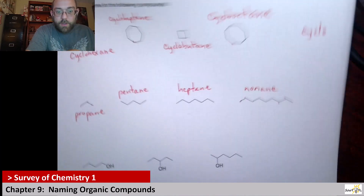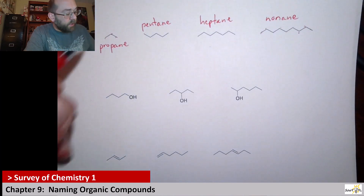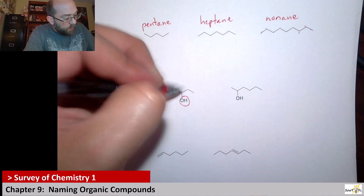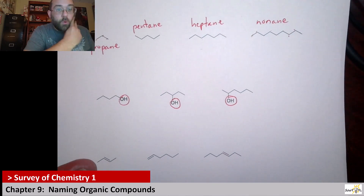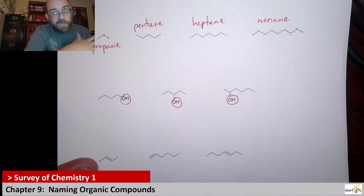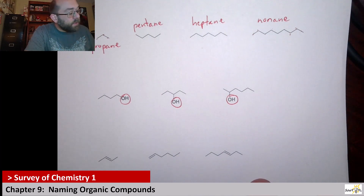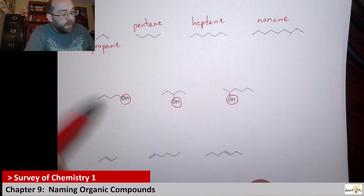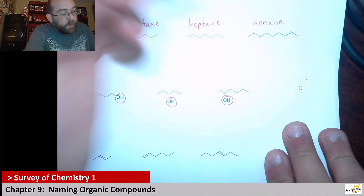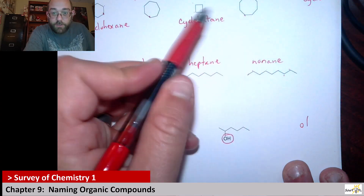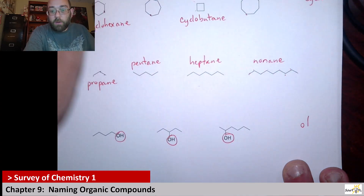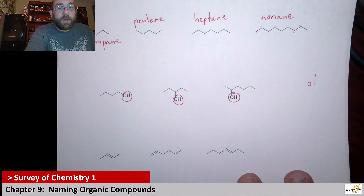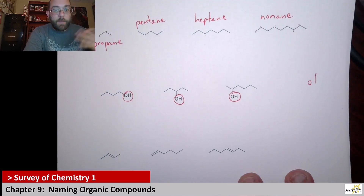Next up, all of these are similar in that they have this OH group — this is called an alcohol functional group. These are alcohols, so every single one of these doesn't end in ane like the first two sets did. They end in ol — O-L for alcohol. You have to first count how many carbons are in the parent.